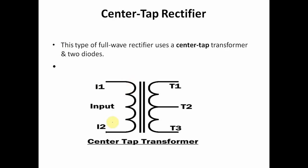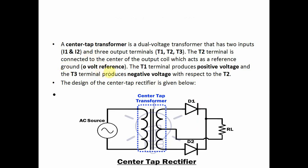This is the connection of the center tap rectifier. The input is applied to the input side, but the output is taken across the secondary side. In the secondary side, there is a common terminal — a center terminal — in between the output side, so there are two parts present. The output is taken across positive with respect to this reference and negative with respect to this reference.